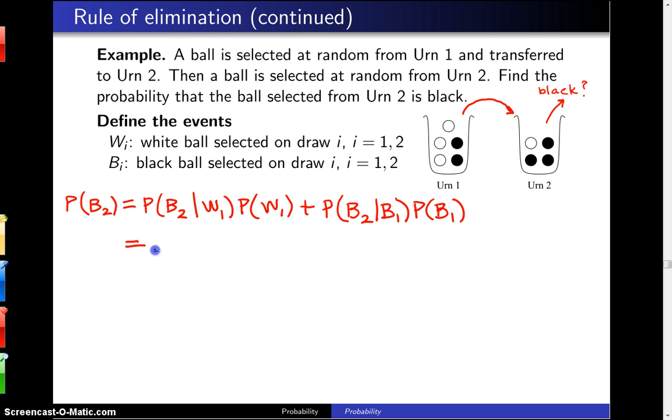So we have four different probabilities to determine here. And let's start with this one. What's the probability of a white on the first draw? It's pretty straightforward. That's going to be 3 fifths. And we can go over here and do these. These two are the easiest. What's the probability of a black ball on the first draw? That's 2 fifths.